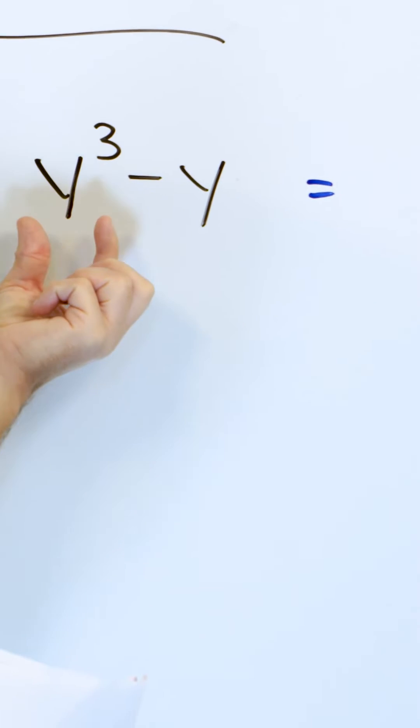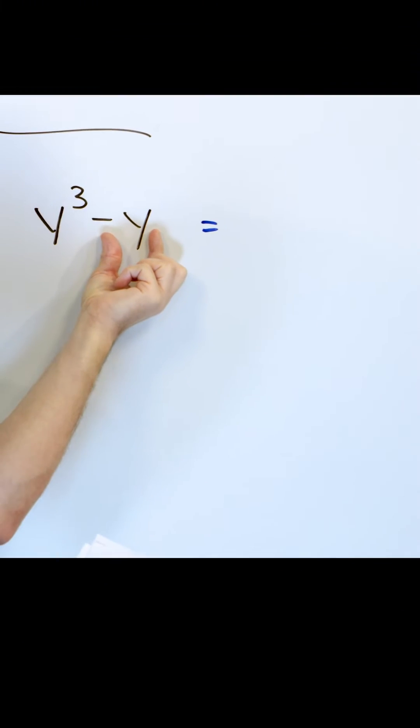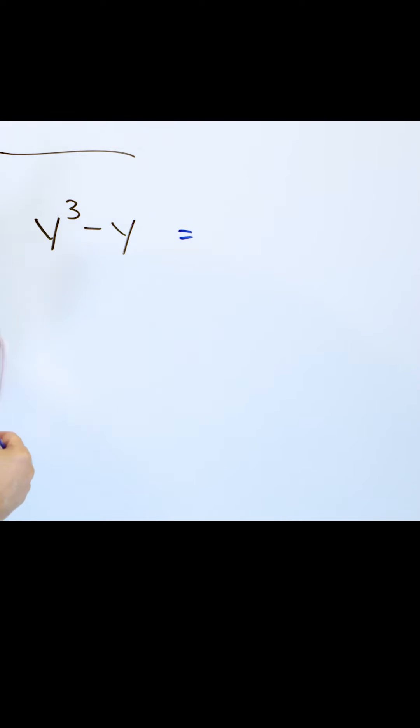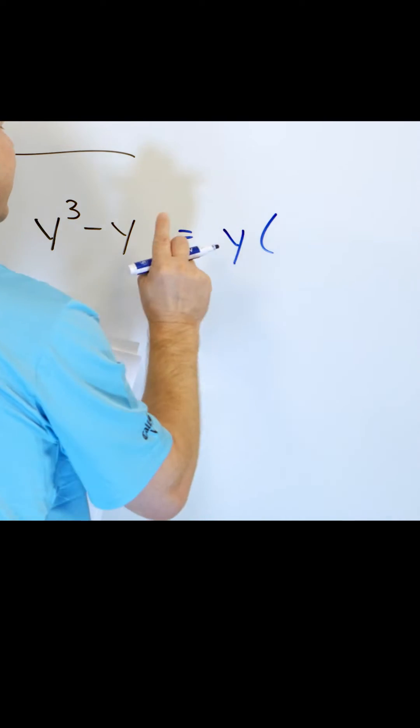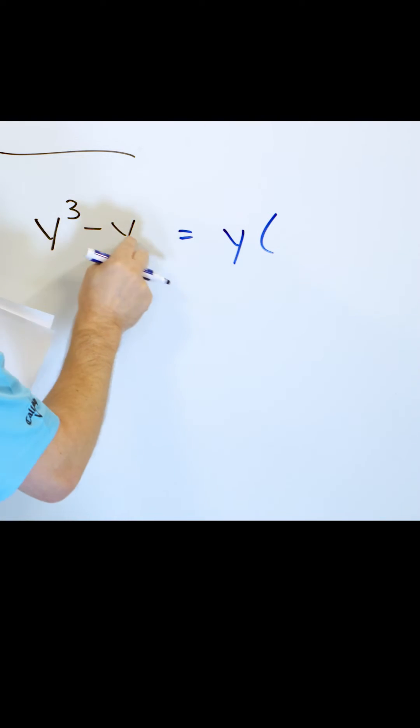And I can't pull y squared out because, yeah, I have enough here, but I don't have enough here. I only have one. I only can pull a single y out because that's the only thing common, the largest thing common to both. So I pull a single y out.